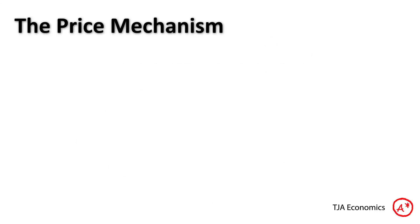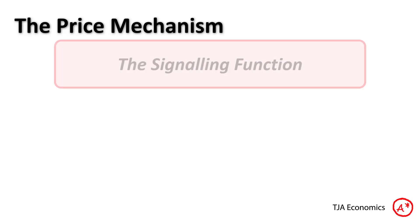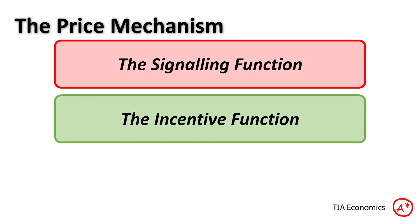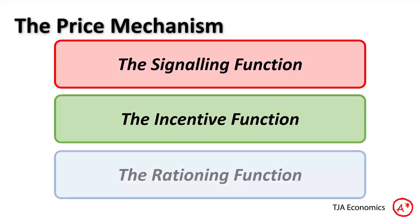So what are the three components of the price mechanism? Well, the first is the signalling function, we have the incentive function, and we have the rationing function. What the price mechanism does is it uses prices to fulfil each of these functions to allocate resources.